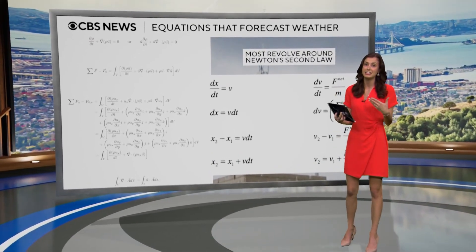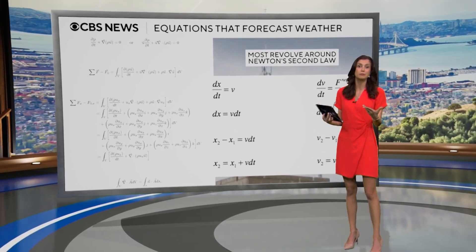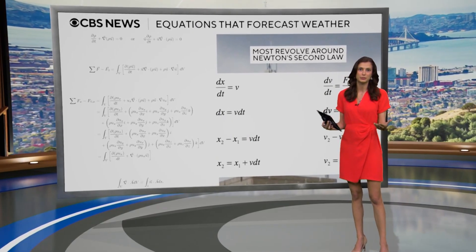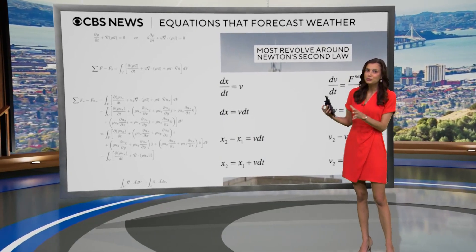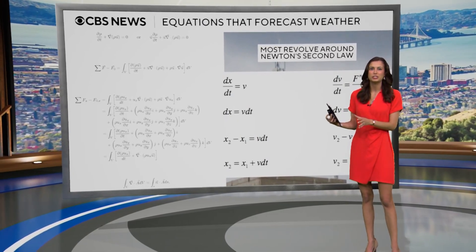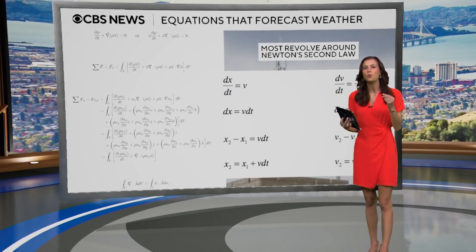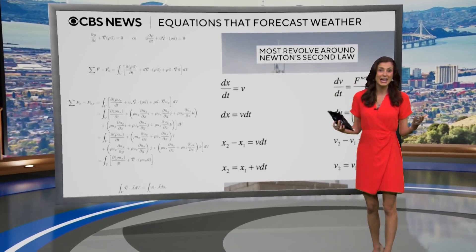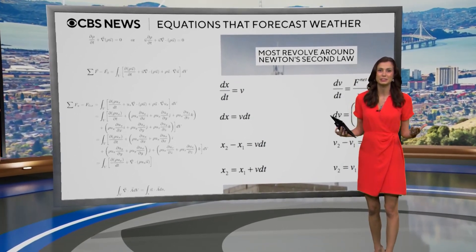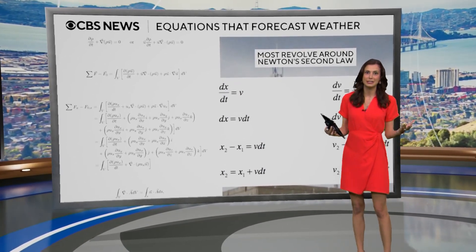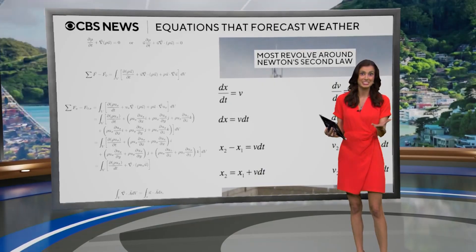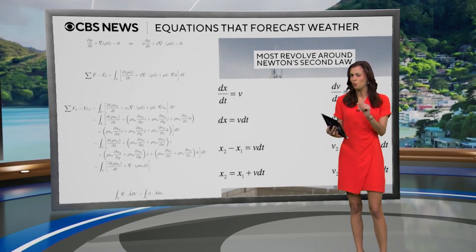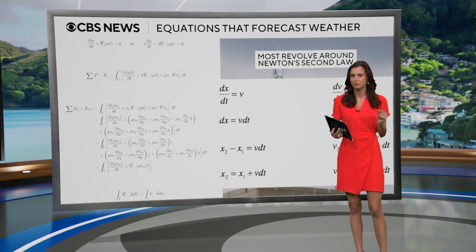Which is basically the fact that if you push something it moves, and if you push something harder it moves farther. We use these equations to create what's known as numerical weather models to predict what's going to happen in the atmosphere — we normally just say 'models' on air. I'm sure you've heard us say it, but you might be wondering: what exactly is a model?